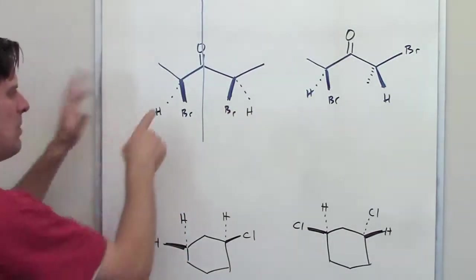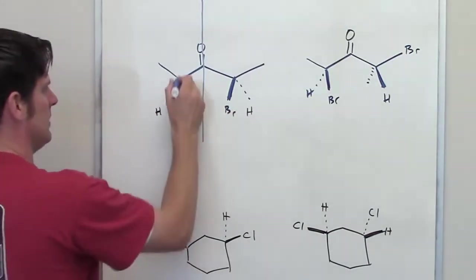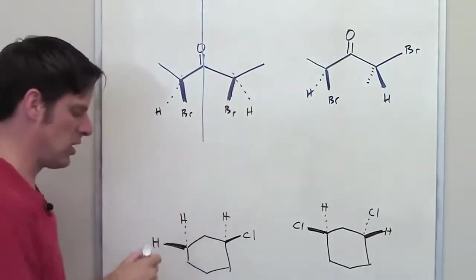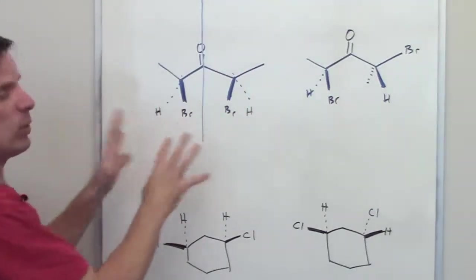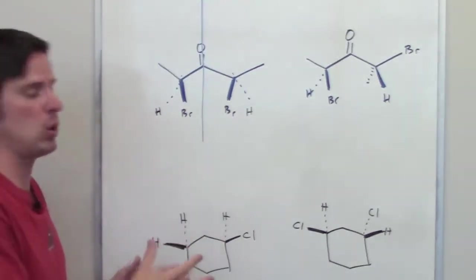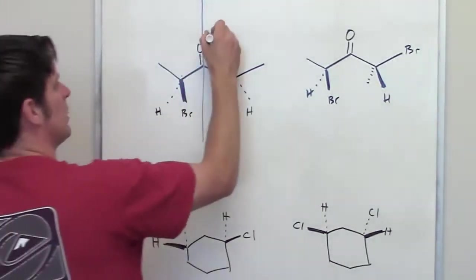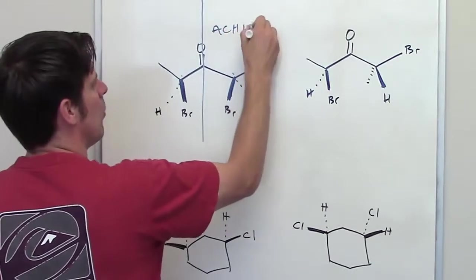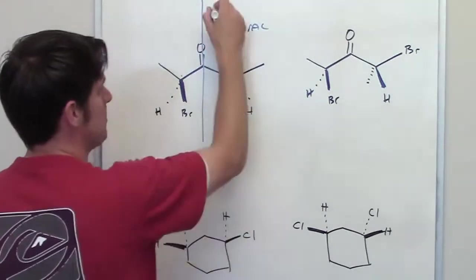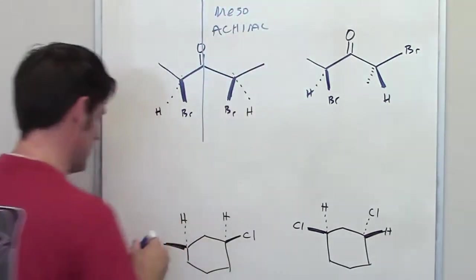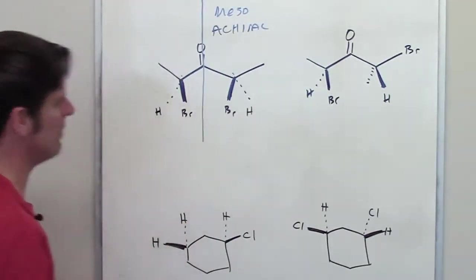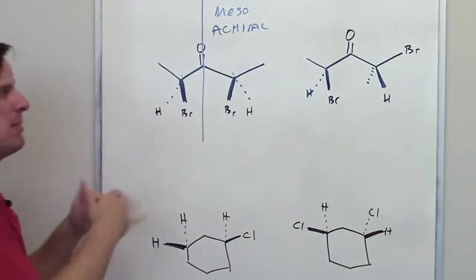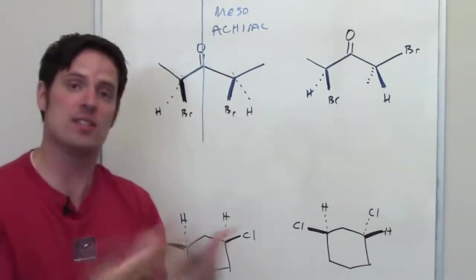So even though technically you might look at these carbon atoms here and be tempted to call them stereocenters, and I guess technically they kind of are, this molecule would not rotate plane polarized light. In other words, this molecule is achiral. Why? The reason is because it's meso. Why is it meso? Because you can bisect it, you can draw a line right down the middle of it, one side looks like the mirror image of the other, which means that it is meso.